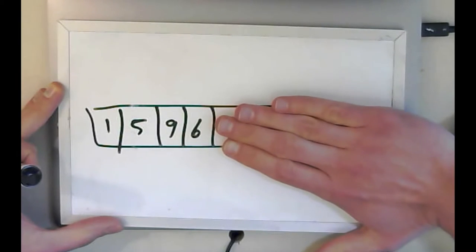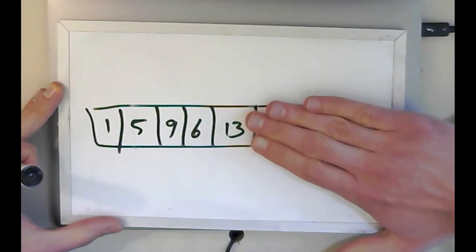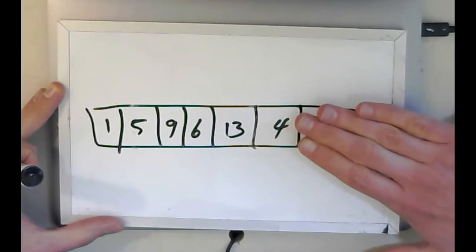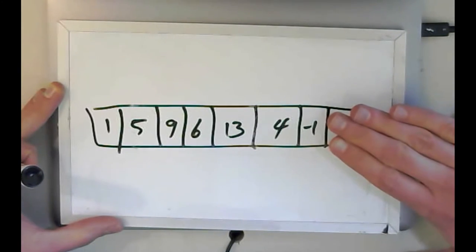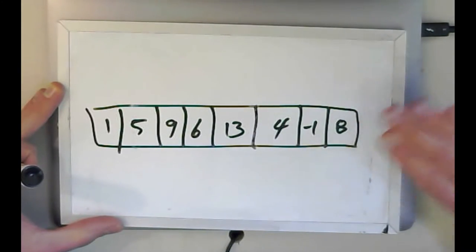Keep going. Six, still not an eight. Keep going. 13, still not an eight. Keep going. Four, still not an eight. Negative one, still not an eight. Eight. Finally, I found it.